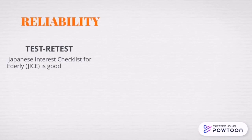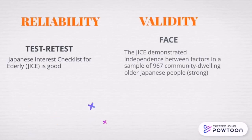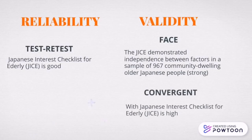The test reliability for the Japanese Interest Checklist for the elderly is good. For face validity, it indicates strong. The last one is convergent validity with JICE, which is high.